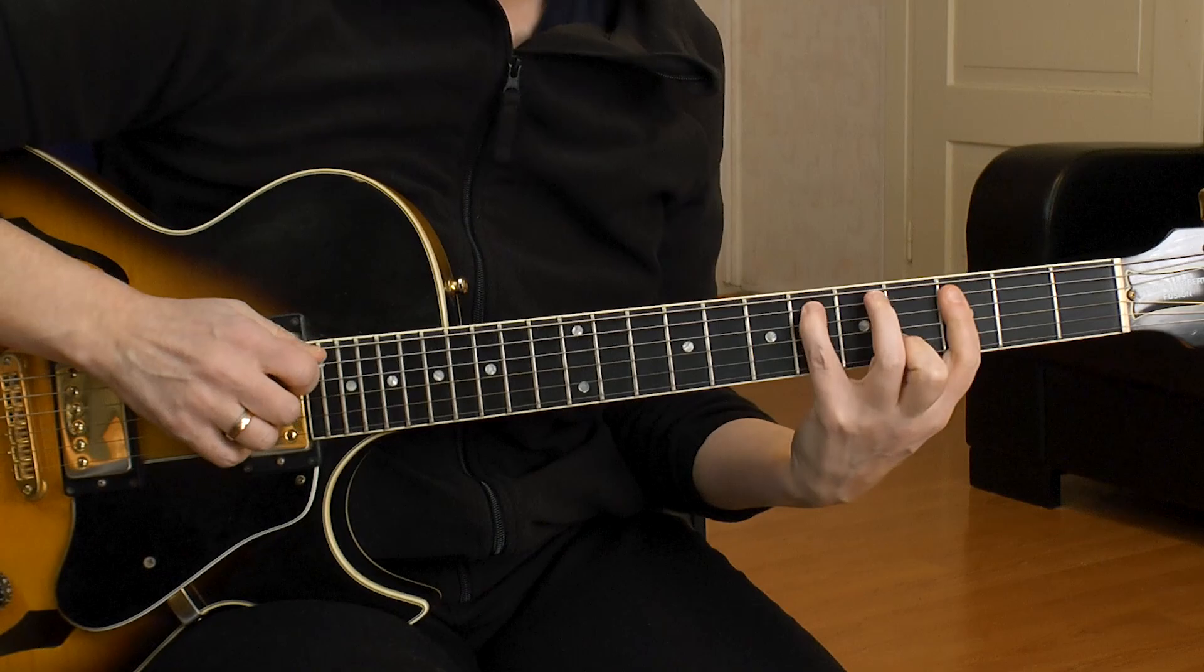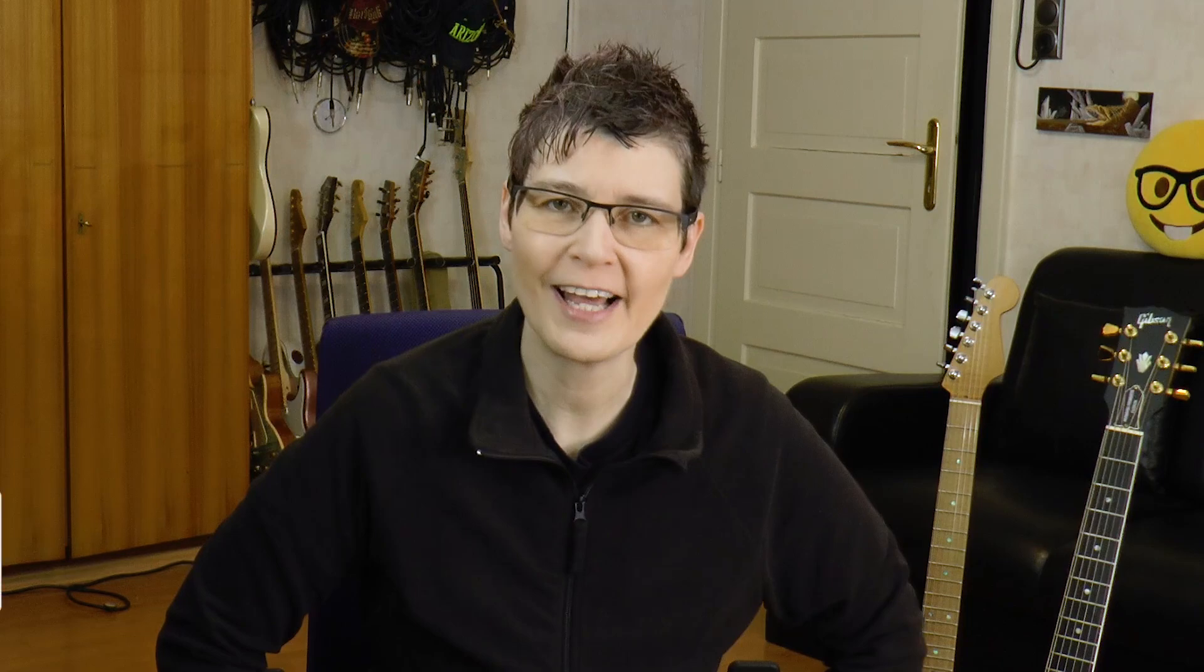We are in the key of E-flat and we have an A1 and an A2 section. Each of these are 16 bars long, so we have a total of 32 bars. Here we go.